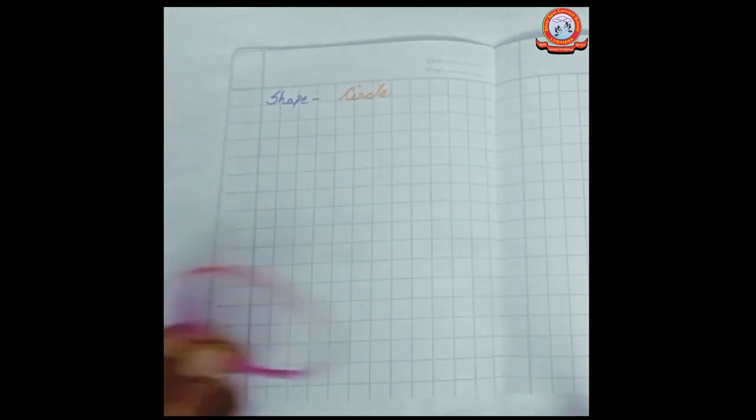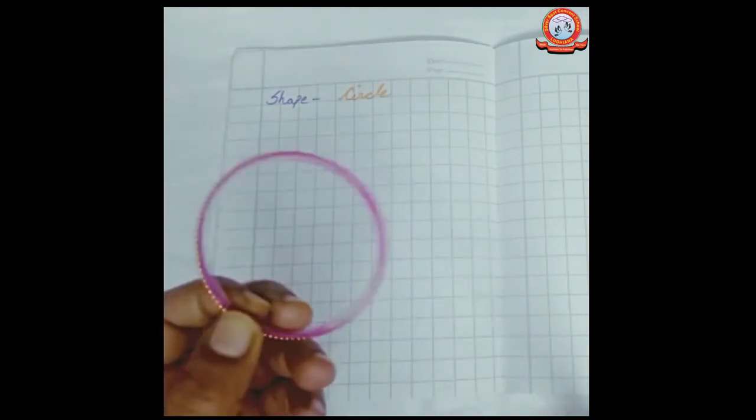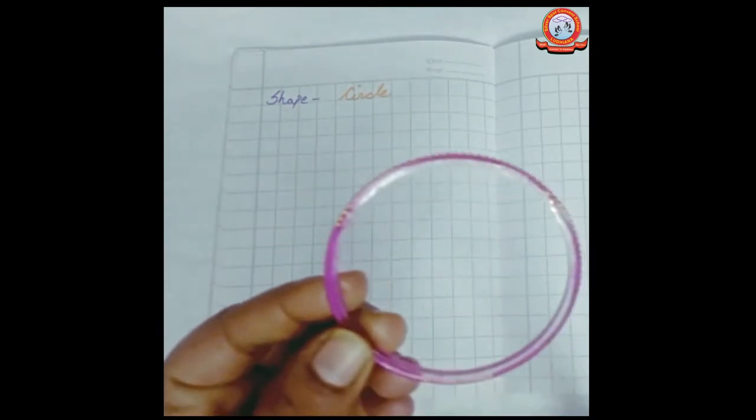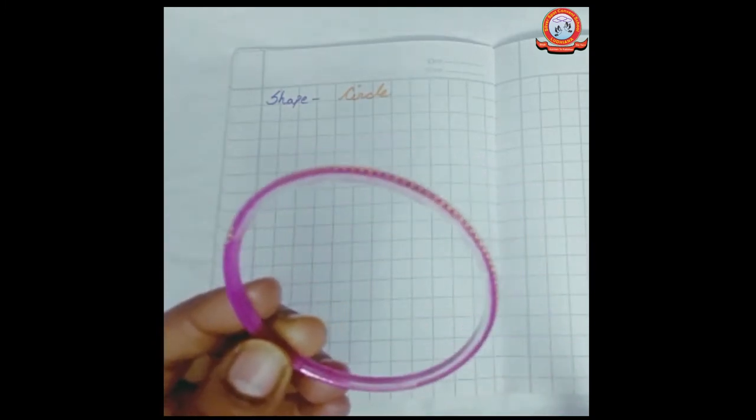See? With the help of this bangle. What do we have? What do I have? I have a bangle. Okay? What is the shape of a bangle? This is in circle shape, right?